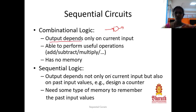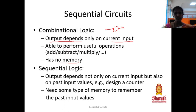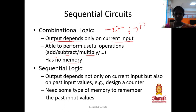The output depends only on current input. It doesn't use any memory because we are not storing any previous output. It just gets input from the user, performs the operation, and produces the output. Examples of combinational logic are adder, subtractor, and multiplier — because for adding two values, we get two inputs from the user, perform the addition, and give the result to the output unit.